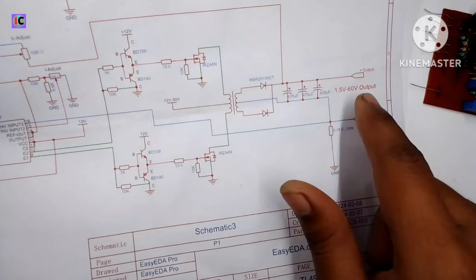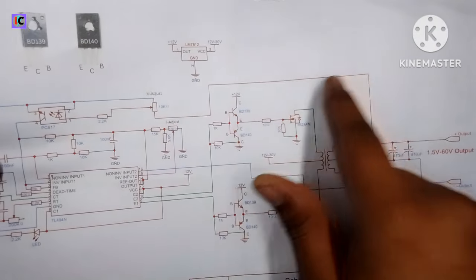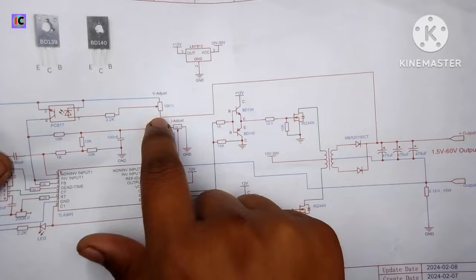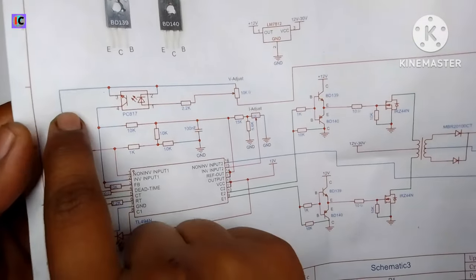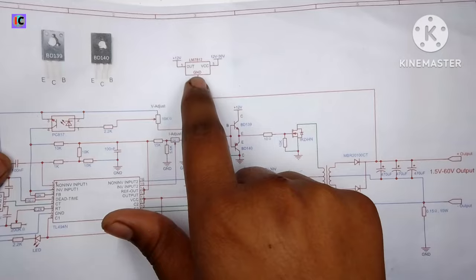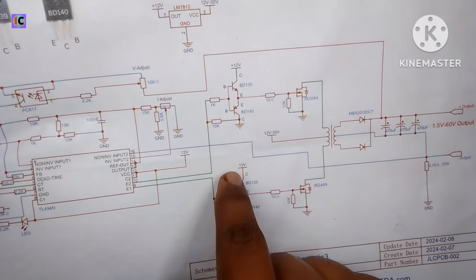We have multiple capacitors at the output. The feedback line will go to the voltage feedback pin and then through the optocoupler. This goes to the inverting pin.